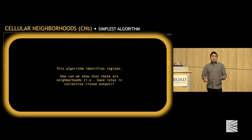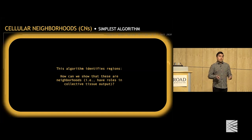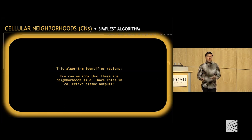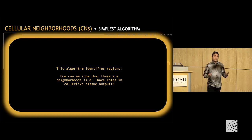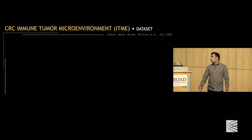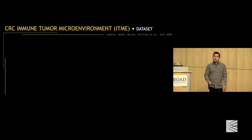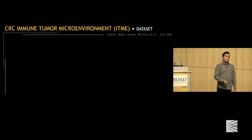This algorithm is just a way to identify regions. What we're interested in is this urban model for tissue semantics — how can we show that these neighborhoods have roles in the collective output of a tissue? For that, we turn to the colorectal cancer immune tumor microenvironment dataset. In this dataset, there are two patient groups: one called CLR, characterized by the presence of tertiary lymphoid structures, and DII patients.